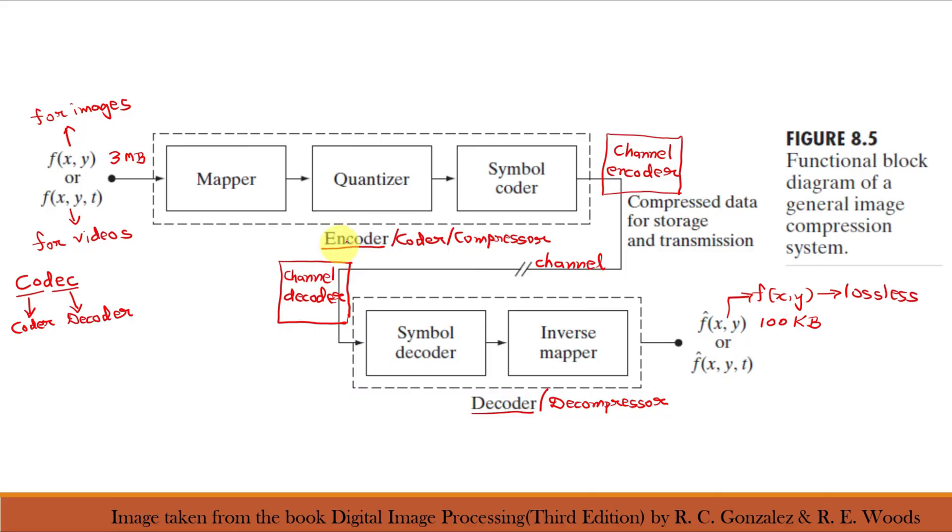The encoder is responsible for reducing or eliminating any coding, interpixel or psycho-visual redundancies in the image. The specific application and associated accuracy requirements dictate the best encoding approach to use in any given situation. Normally, the approach can be modeled by series of three independent operations: mapping, quantizing and symbol encoding. Here, each operation is designed to reduce one of the three redundancies.